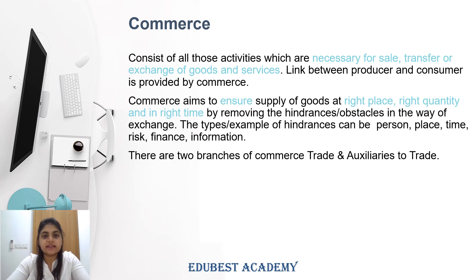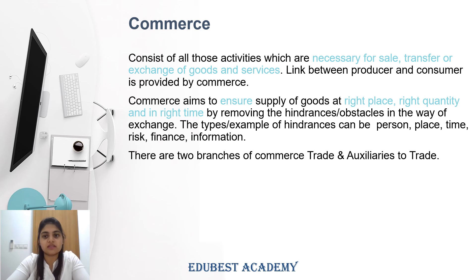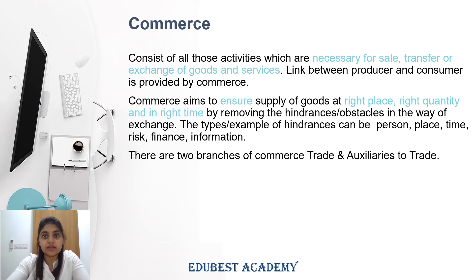The second part of business is commerce. Commerce is made up of all activities that are necessary for the sale, transfer, and exchange of goods and services — whether selling them, giving them to someone else, or exchanging them. Commerce basically provides a link between producer and consumer, and includes all services that help both of them in easy trade. Commerce ensures that the supply of goods happens at the right time, in the right quantity, at the right place, and removes all obstacles that come between the producer and consumer — whether related to person, place, time, risk, finance, or information.